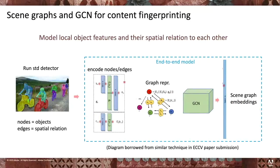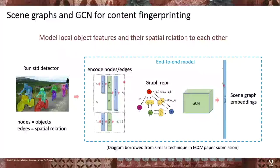To give a sense of this architecture and pipeline: you take an image and run it through a standard object detector, creating a graph representation where the nodes are objects and their visual features, and the edges represent spatial relationships between those objects — distances, overlap, and similar spatial information. Once you have this graph representation, you pass it through a graph convolutional network that learns to represent the scene in a way we believe will better model local object features and their spatial relationships.